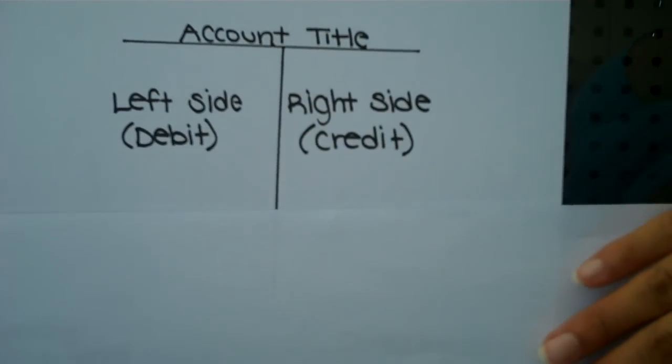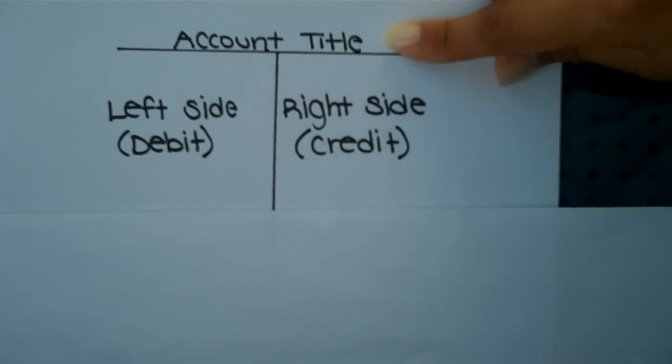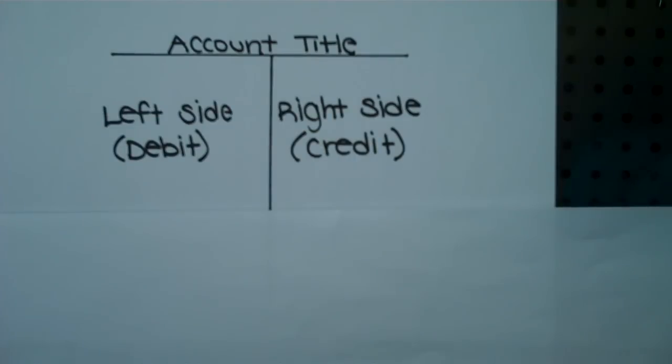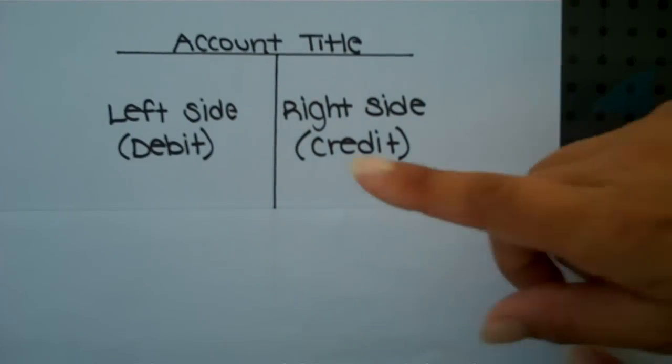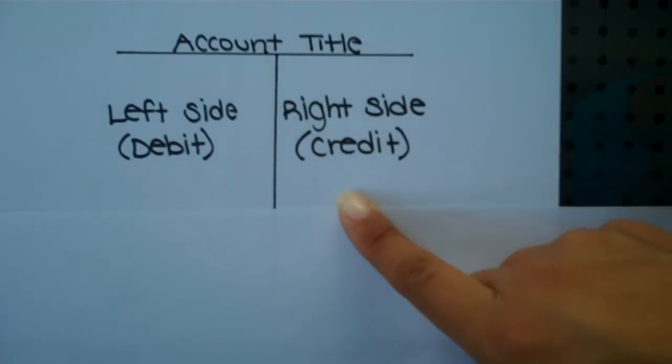At the top of the T, you have the account title. So again, you'll have a T-account for every single account the company has: cash, accounts receivable, equipment, supplies, accounts payable, et cetera. And then there's a left side to the account and a right side to the account.